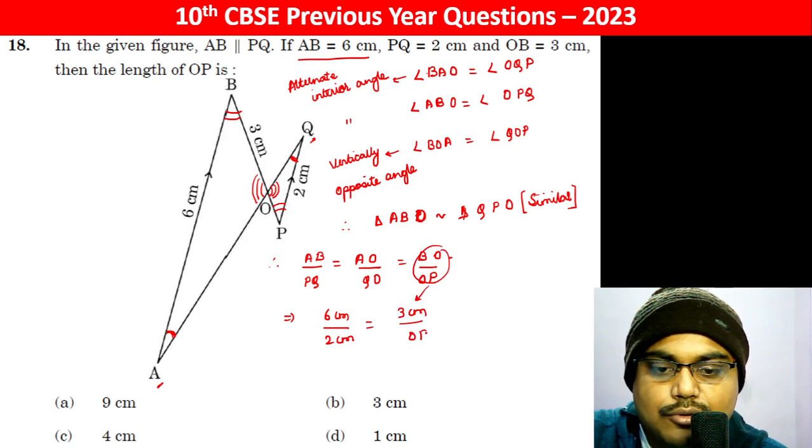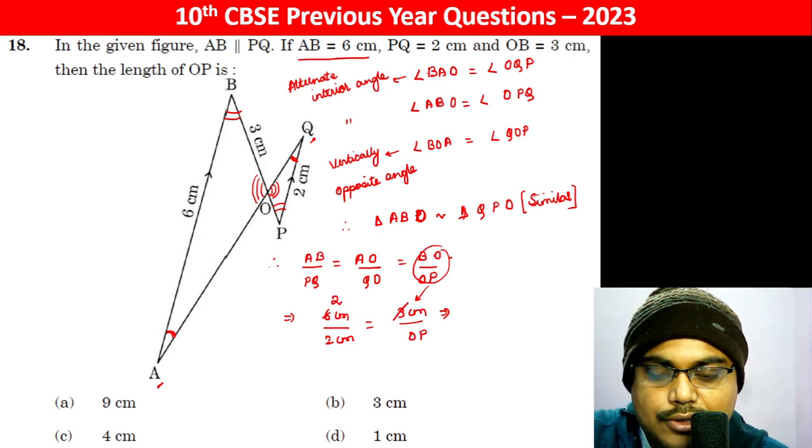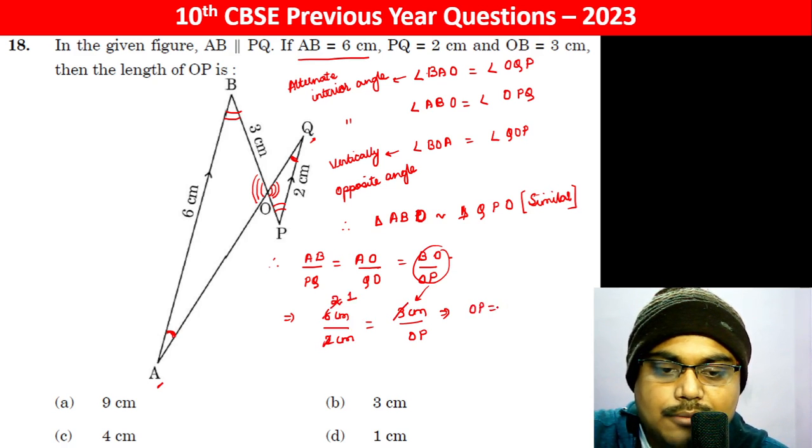So therefore, OP क्या हो जाएगा? 3 से यह 2 हो गया, 1 हो गया. So OP becomes 1 cm.